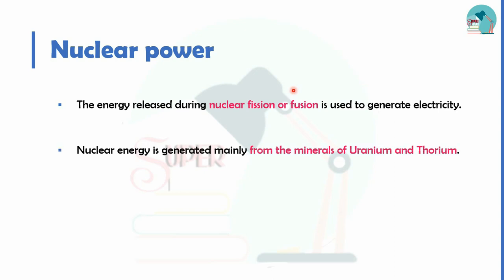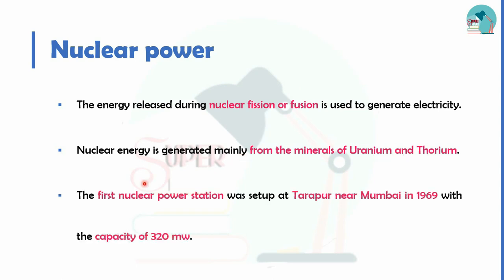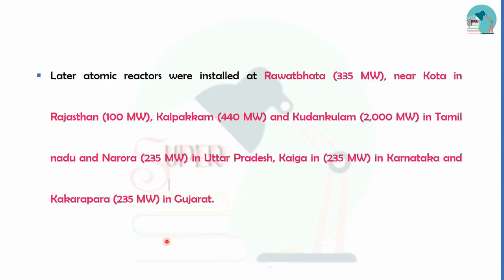Nuclear power is produced using the main minerals uranium and thorium. The first nuclear power station was established at Tarapur, Mumbai in 1969, with a capacity of 320 MW. There are also 335 MW installations in Rajasthan.